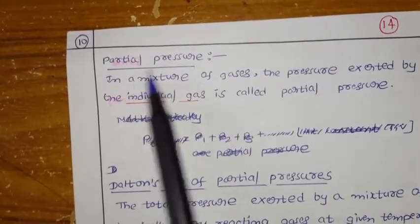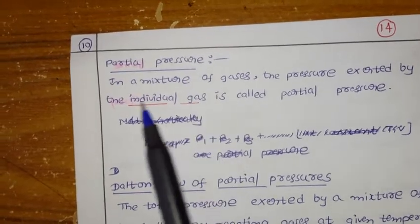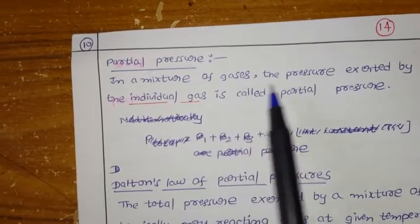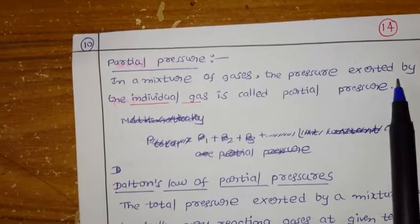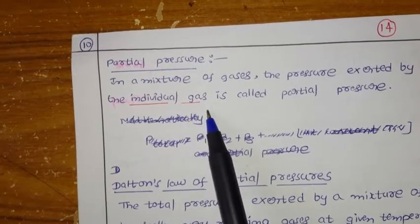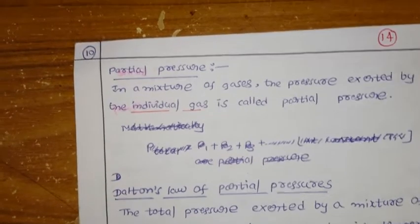What is partial pressure? In a mixture of gases, the pressure exerted by the individual gas is called partial pressure.